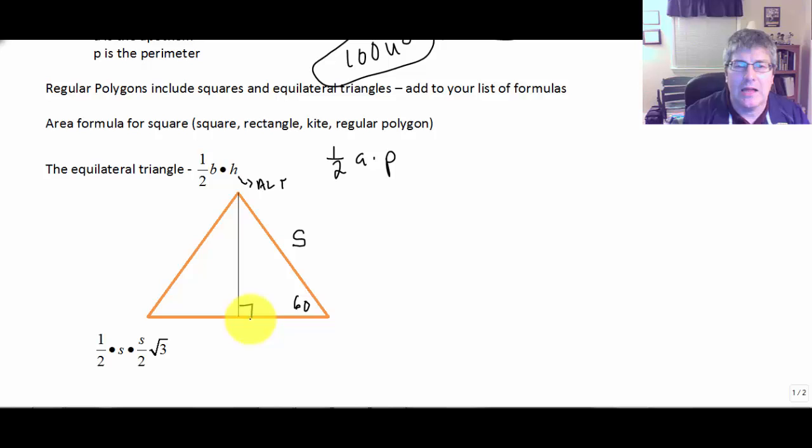And we know that the altitude in this triangle would split this into S over 2 and S over 2. We're going to split this in half. So if we add those together, that would be length side S.